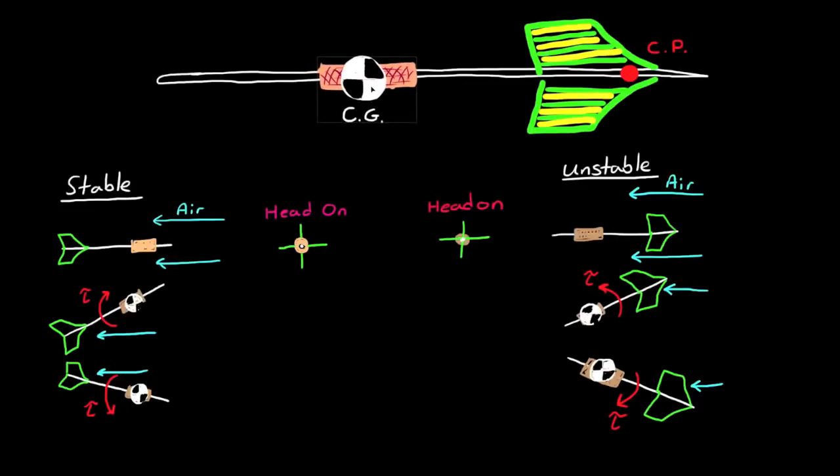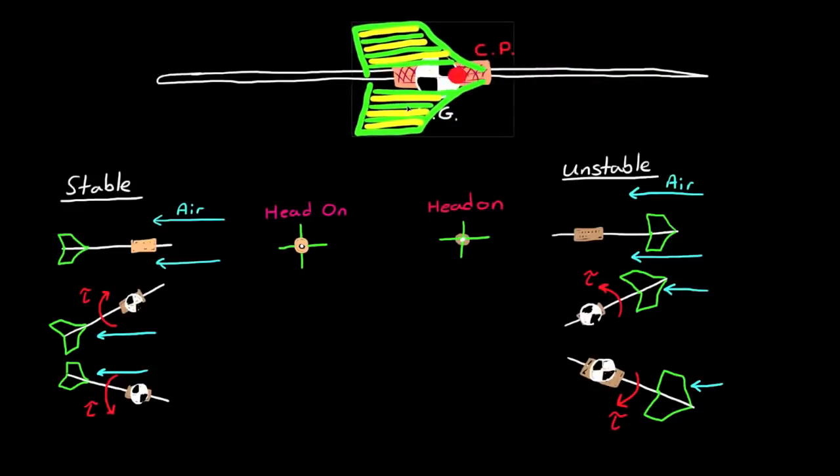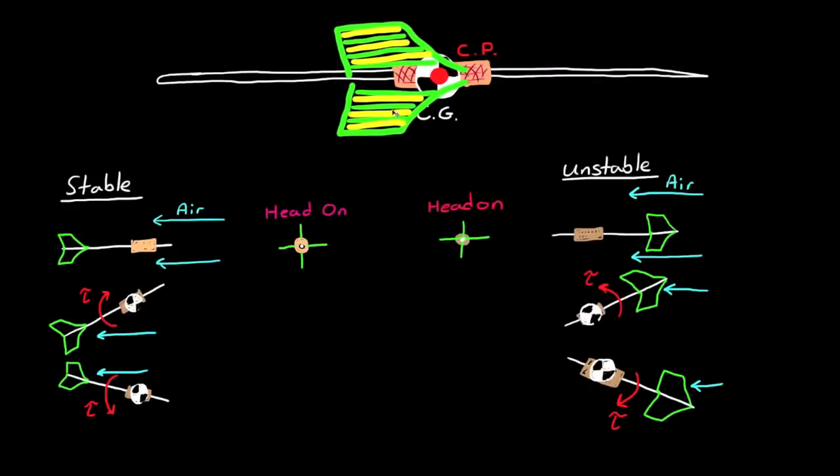But just like with the ball lying on a flat table, there is a point where you could place the flights that would delineate between a stable system and an unstable system.